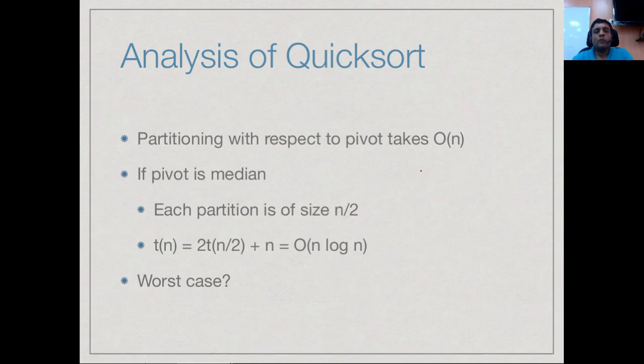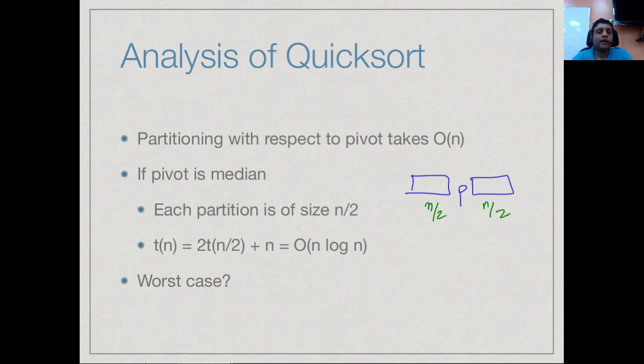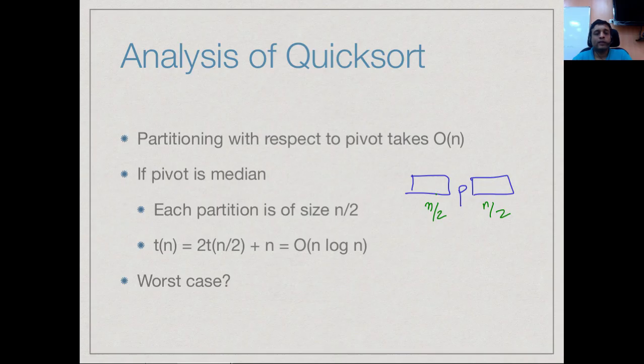The question is how big are the recursive problems. If the pivot is the median, you would expect that by definition of the median these are of size n by 2, because the median splits the array into two equal parts. If you have this fortunate situation that the pivot is the median, we end up with the merge sort recurrence which says that t of n takes time 2 times t of n by 2 for the two parts, and this is the partitioning step.